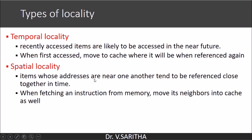Spatial locality means if information at memory address 1000 is accessed, then in the next few nanoseconds the information at addresses 1001 and 1002 will also be accessed — that is spatial locality. So when fetching an instruction from memory, we move its neighbors into cache memory as well. If we access the instruction at location 1000, we move the complete block from main memory to the cache memory — that is based on spatial locality.